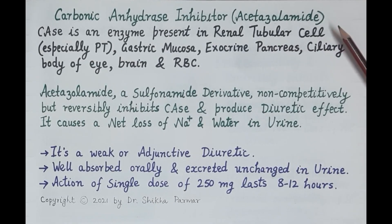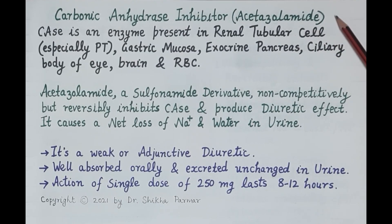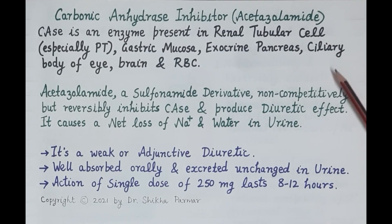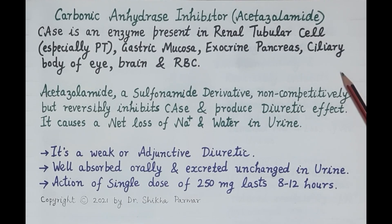Hello students. In today's video we will discuss the pharmacology of a diuretic that inhibits carbonic anhydrase enzyme — acetazolamide. Carbonic anhydrase is an enzyme present in renal tubular cells, especially the proximal convoluted tubule, gastric mucosa, exocrine pancreas, ciliary body of the eye, brain, and RBCs.